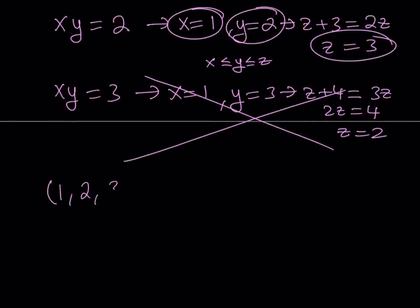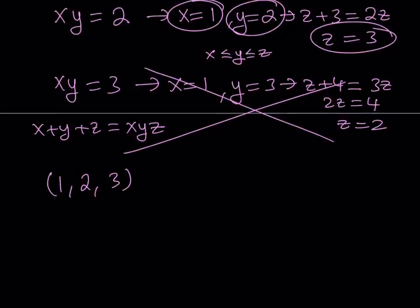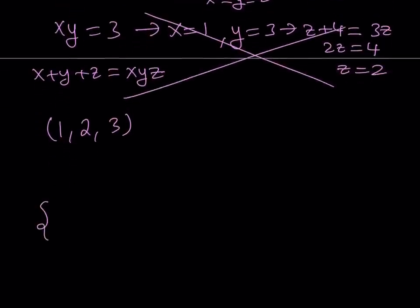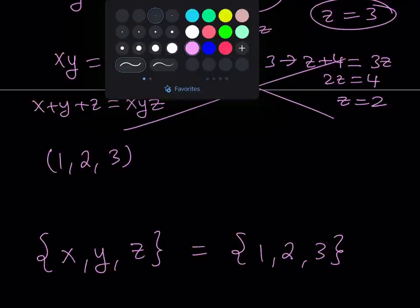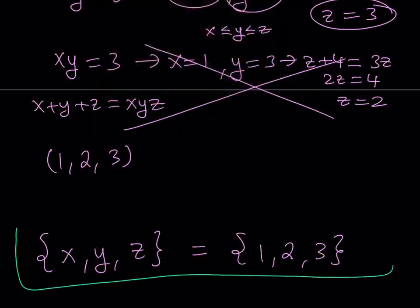Here's the thing. If 1, 2, 3 satisfy the original equation, all the permutations of this is also going to satisfy. Why? Because x, y, z are all interchangeable. Therefore, our assumption didn't really matter because you could also do the same thing with z, y, x or any other permutation. Therefore, as a solution, I'm going to write it as a set. The solution to this equation is given by the set {1, 2, 3}, which means that x, y, z can be any of those numbers. As long as they're all distinct, we're going to be good. And this brings us to the end of this video.